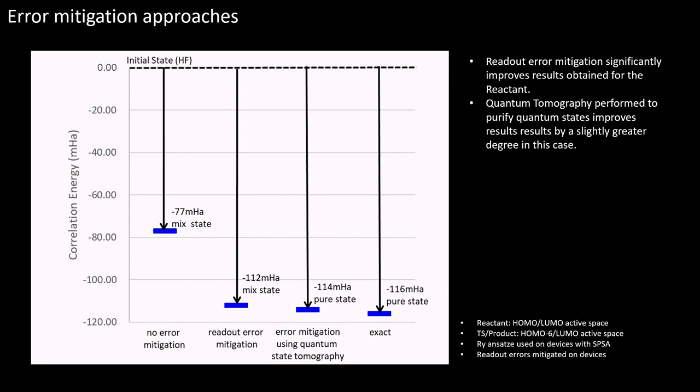Given these results showing the highly mixed quantum state of the reactant, we examined the use of an alternative error mitigation approach involving the use of quantum tomography to purify the quantum state of the reactant and compare it with readout error mitigation. In comparison to Hartree-Fock, we arrive at a mixed state which is 77 millihartrees more stable than Hartree-Fock, but is nowhere near the exact value. Readout error mitigation improves this value to 112 millihartrees, which is within 4 millihartrees of the exact result. The use of quantum tomography to purify the quantum states improves results by another 2 millihartrees to the point at which the energy approaches chemical accuracy.